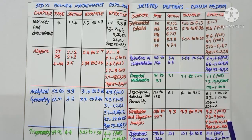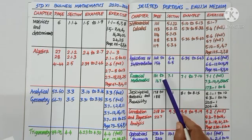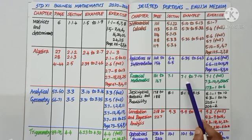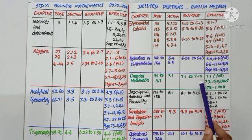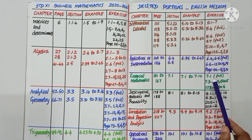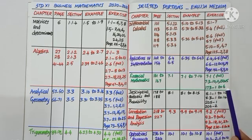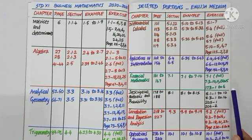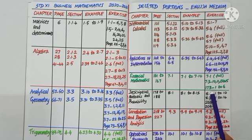Chapter 7: Financial Mathematics. The very first exercise 7.1, based on annuities, is deleted — from page number 161 to 167, section 7.1. Examples 7.1 to 7.10 are deleted, and the full exercise 7.1 based on annuities is deleted. In exercise 7.3, problem numbers 10, 11, and 13 to 15 are deleted. In miscellaneous problems under Chapter 7, page number 173, problem numbers 1 to 6 are deleted.